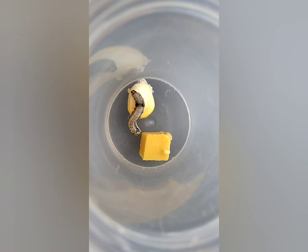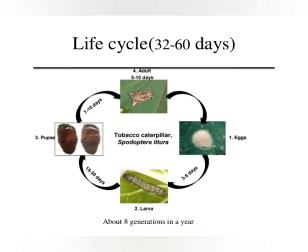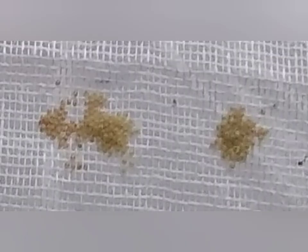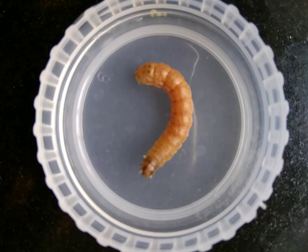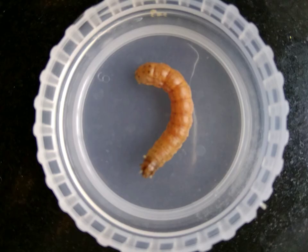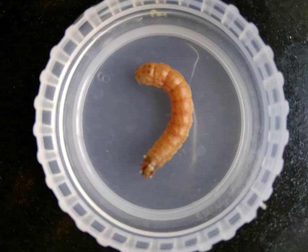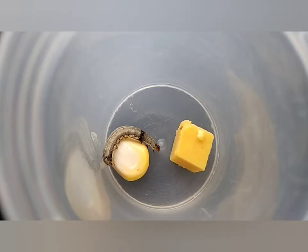Similarly, Spodoptera litura, or tobacco cutworm, damages more than 87 species of crops. The life cycle of Spodoptera frugiperda and litura consists of mainly four stages: eggs, larvae, pupae, and moth. Out of all these four stages, the larval stage is the most damaging stage that causes maximum damage to the crops.